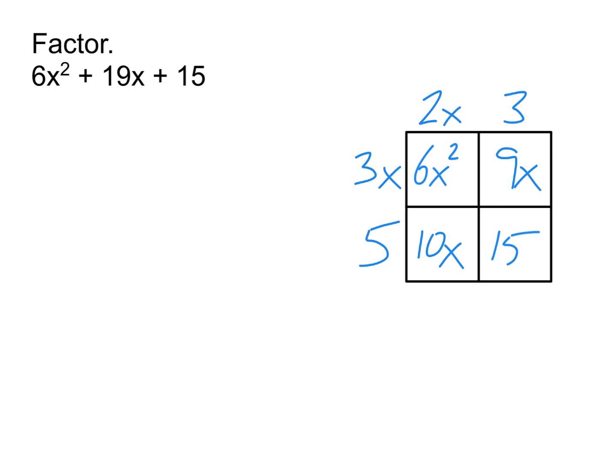So that means we started, in this particular case, with the right answer, the right guess. It's not always that way, of course. Sometimes then you've got to switch them around, try different things. But this way it works. So our factored form, the whole point remember, was to get this answer where we write it down in factored form. 2x plus 3 from across the top, and then down the left side we have 3x plus 5.